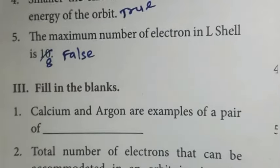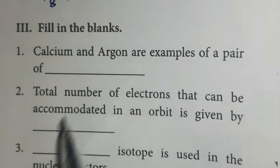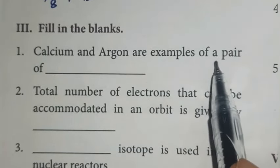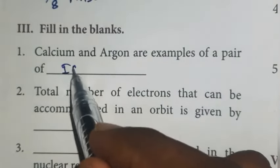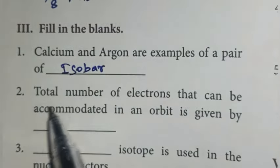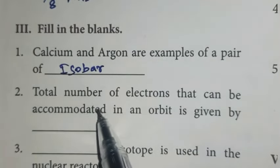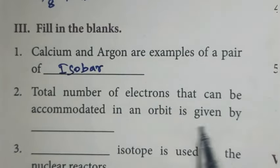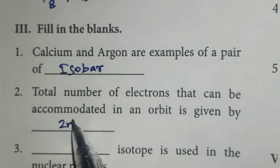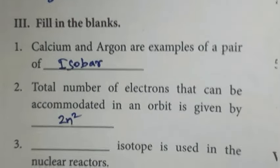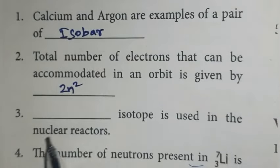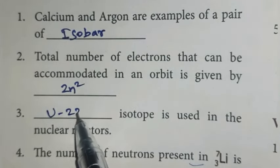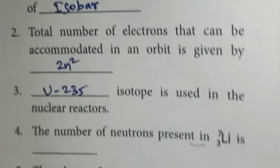Part three: fill in the blanks. First one: calcium and argon are examples of a pair of isobars. Second one: total number of electrons that can be accommodated in an orbit is given by the formula 2N², where N is the number of the orbit. Third one: uranium-235 isotope is used in nuclear reactors.